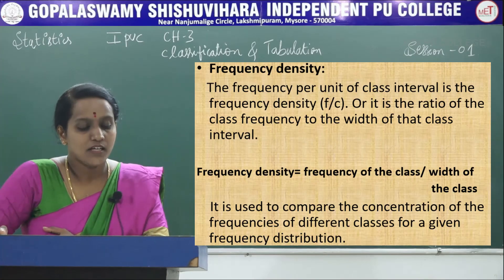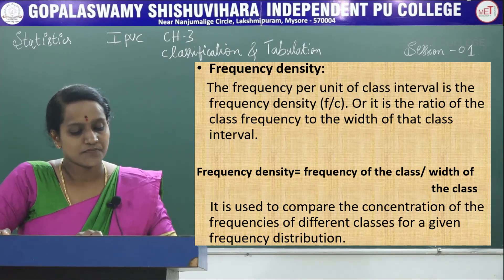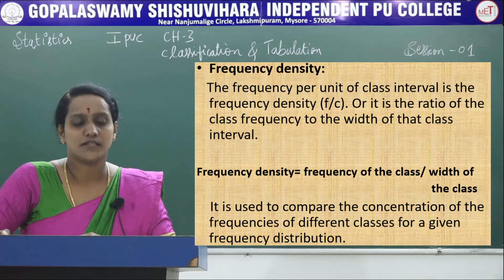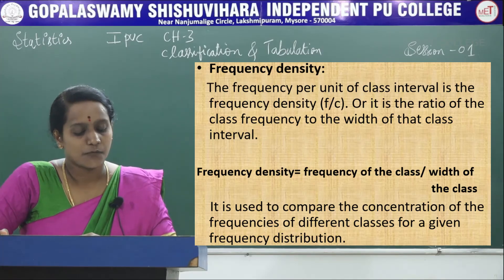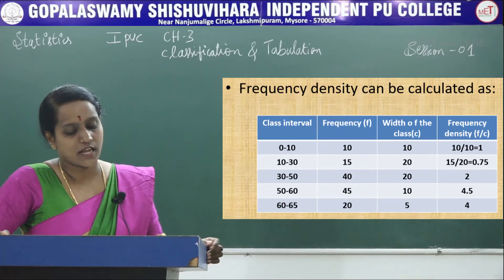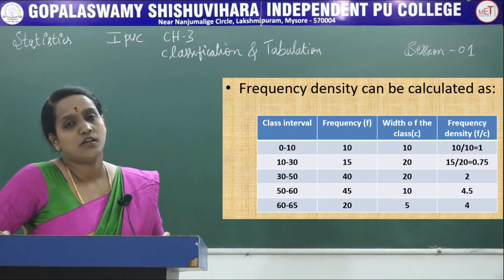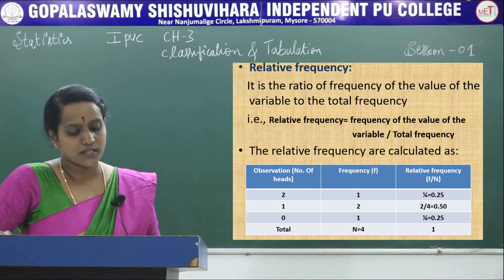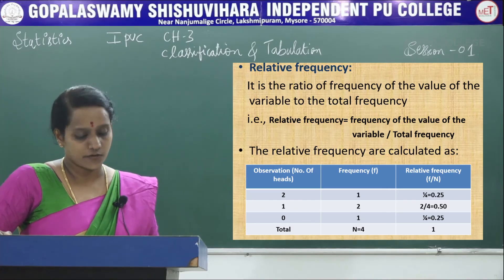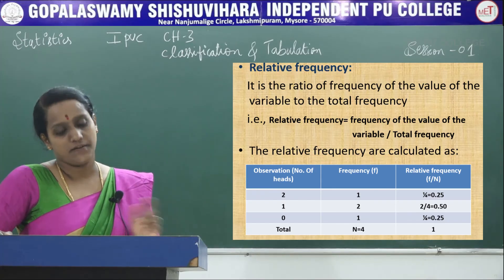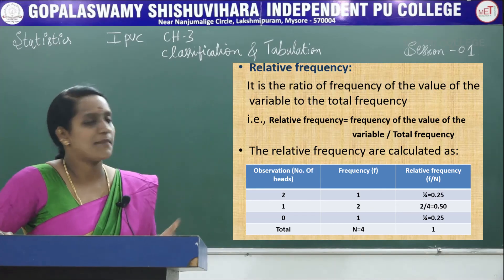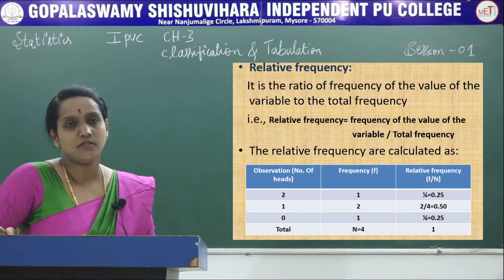Next is frequency density. The frequency per unit of class is called frequency density — it is the ratio of class frequency to the width of that class interval: frequency density = frequency of class ÷ width of class. Next is relative frequency. It is the ratio of the frequency of the value of the variable to the total frequency: relative frequency = frequency of value of variable ÷ total frequency.